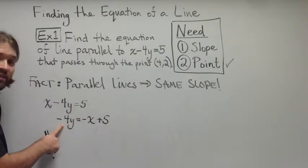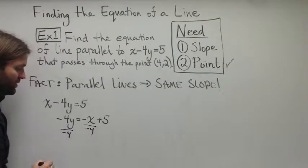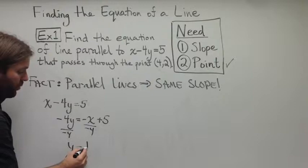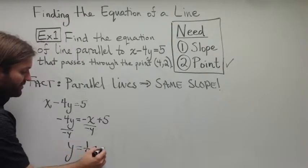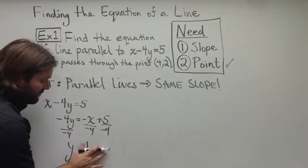And then we're going to divide both sides by negative 4. Doing so gives us y is equal to 1 fourth x plus minus 5 fourths.